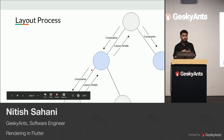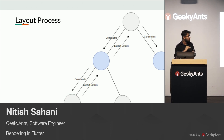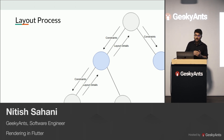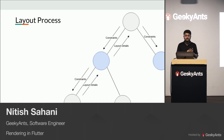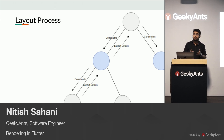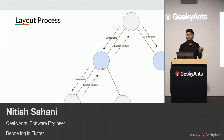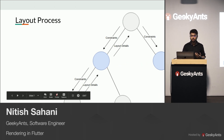This goes on until we reach the leaf node. Then the bottom node figures out the layout details of itself. For example, if the parent passes down a maximum width of 500 pixels, the child widget can say, I can use all of it, or I can use only 100 pixels of the width. These are the layout details which the widget sends back to its parent. This goes on until it reaches the top of the tree.